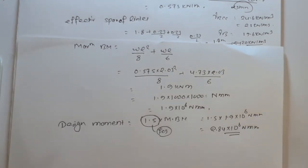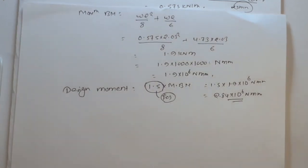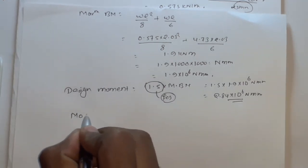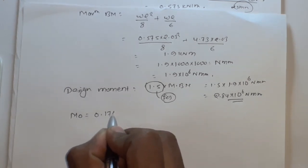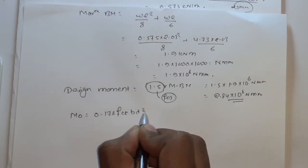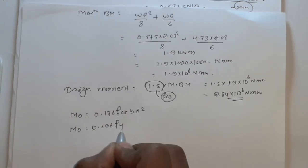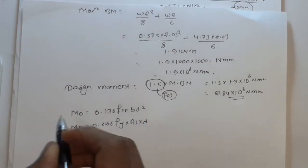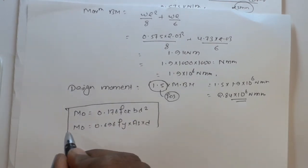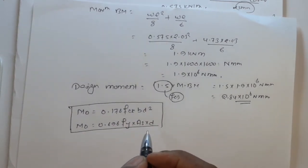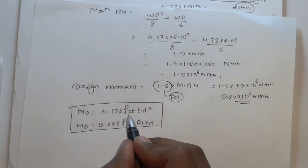Now we apply the two important design moment formulas. Formula 1: M₀ equals 0.176 fck b d². Formula 2: M₀ equals 0.696 fy into As into d. Where fck is the characteristic compressive strength, fy is the yield strength of steel, b is the width (thickness of lintel), d is the effective depth, and As is the area of steel required.